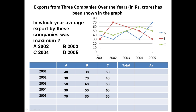This blue is representing company A. Company A is exporting in 2001: 40 crores, then 30 crores, then 50 crores, again 30 crores, and here it is 70 crores. Now if you see the export of company B, represented by red, it is 30 crores in 2001.